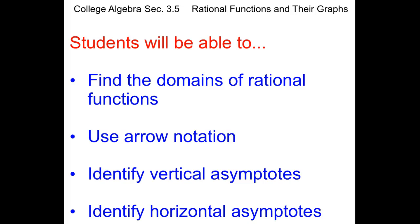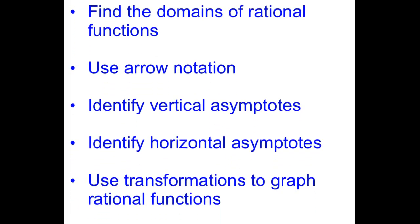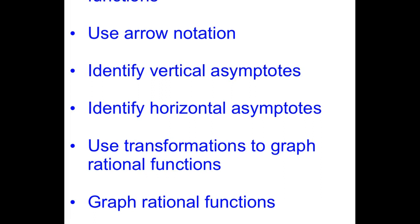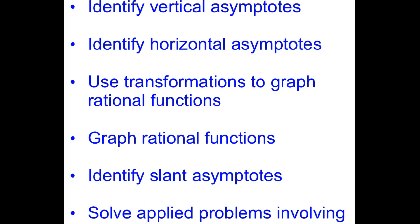We're going to look at some arrow notation and how that applies to vertical and horizontal asymptotes, and we're going to be able to identify those asymptotes from our equation. For today, we'll look at how we can take a basic graph and transform it — shifting it left, right, up, down, like we've done in the past. Tomorrow we'll get to more of the confusing rational functions and look at slant asymptotes.